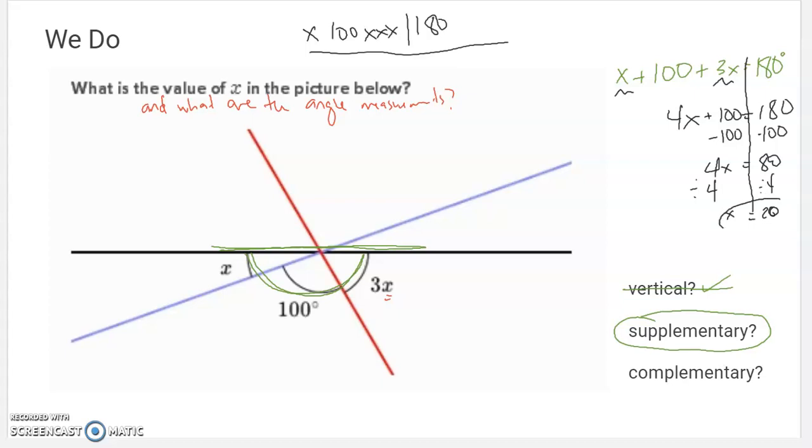So notice I've found x. That doesn't necessarily mean I'm done. I found the value of x. But let's make sure we finish up the problem. So one of the angles actually is x. So this angle is 20 degrees because x is 20 degrees. This angle we still have to find. Sometimes you'll stop and be like, oh, I found it. x is 20. So this angle is 20. But not quite.